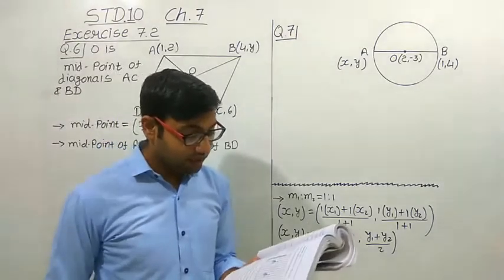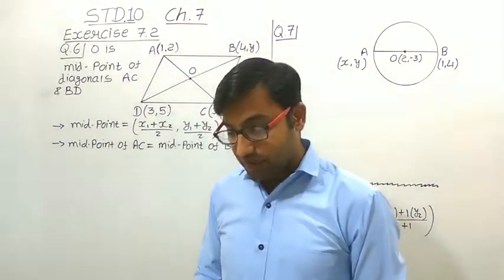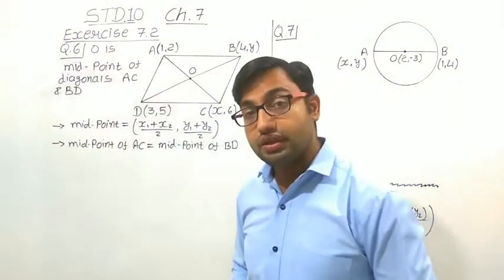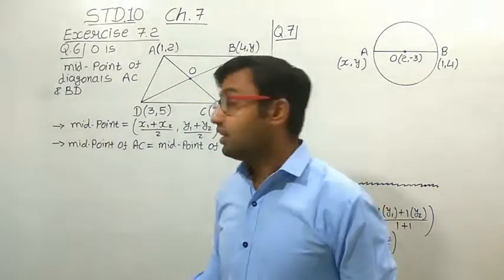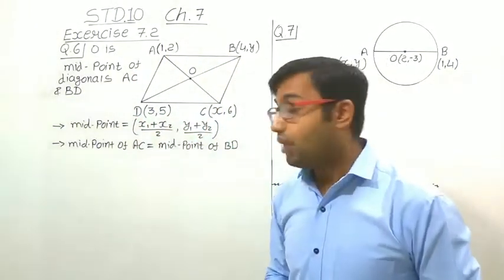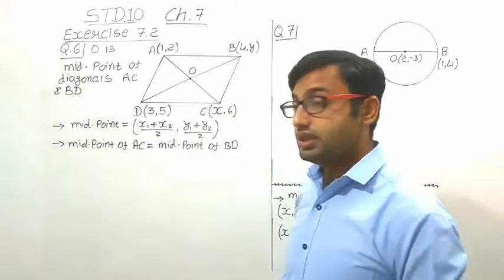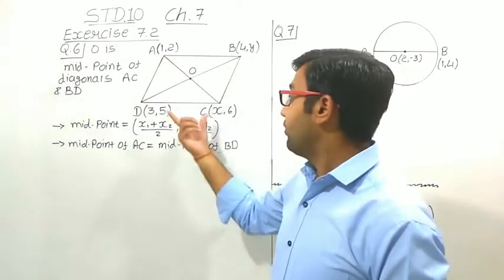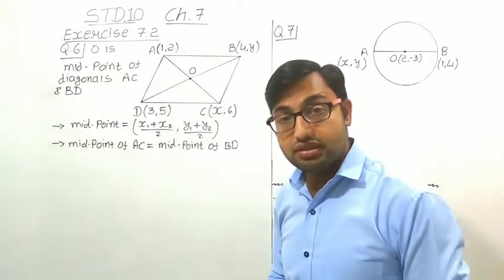In question number 6, we are given that (1, 2), (4, Y), (X, 6), (3, 5) are the vertices of a parallelogram taken in order. Find X and Y. So we have four coordinates of a parallelogram. Taking A as (1, 2), B as (4, Y), C as (X, 6), and D as (3, 5). Now how can we find Y and X? We could use the distance formula, but here we get two variables, so we cannot solve it that way.